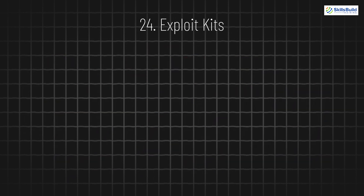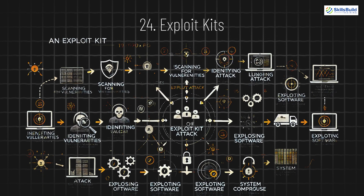24. Exploit Kits. Exploit kits are automated tools used by hackers to find and exploit vulnerabilities in software. These kits help launch attacks quickly by taking advantage of flaws in popular software and applications.